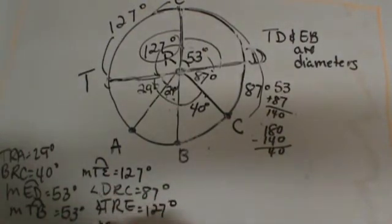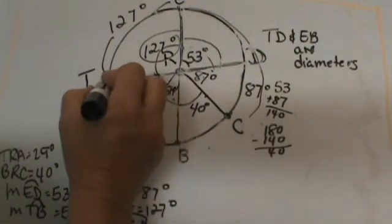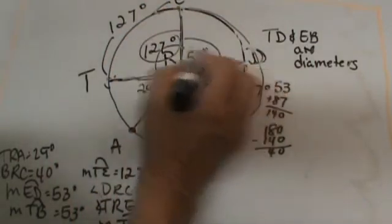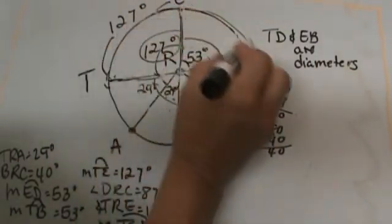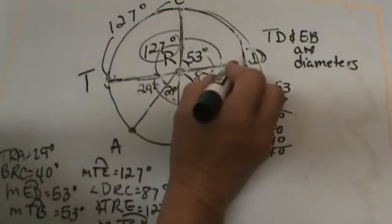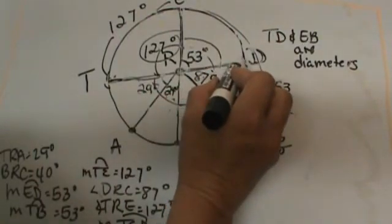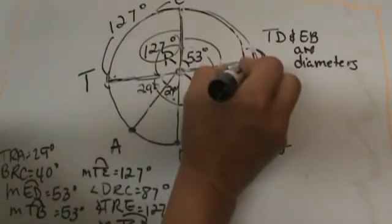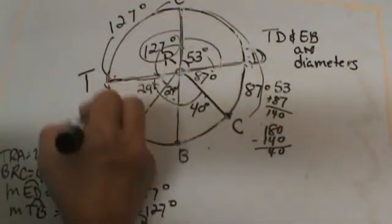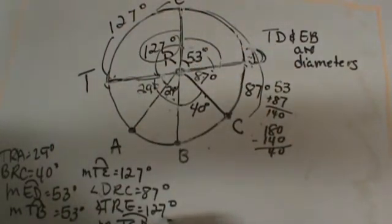The measure of TED. Let's see if we can find that arc, T to E to D. So from here all the way over. What do we know about TD? TD is a diameter, so either side of these, TED or TBD, would have to be 180. It is a semi-circle.